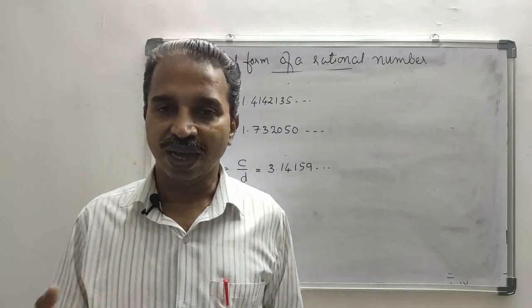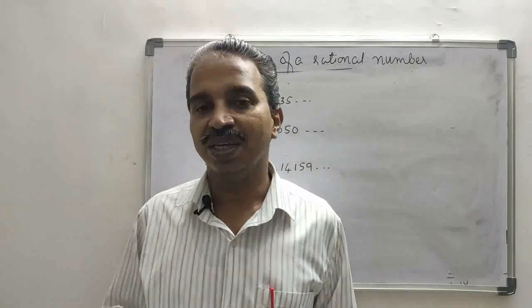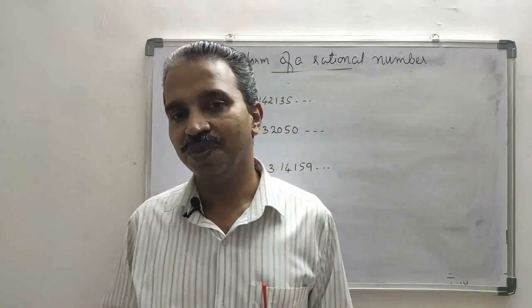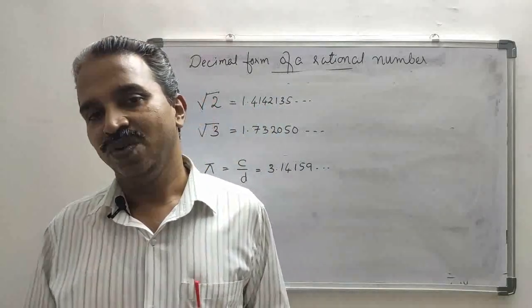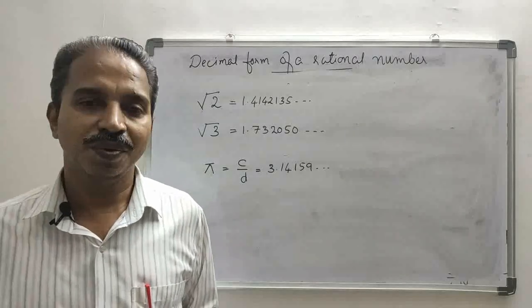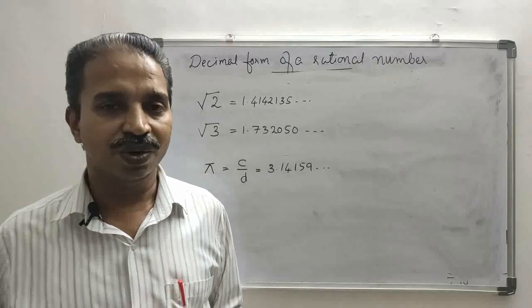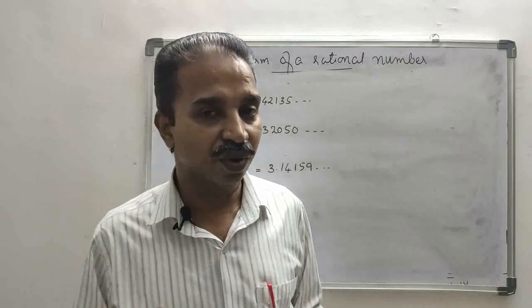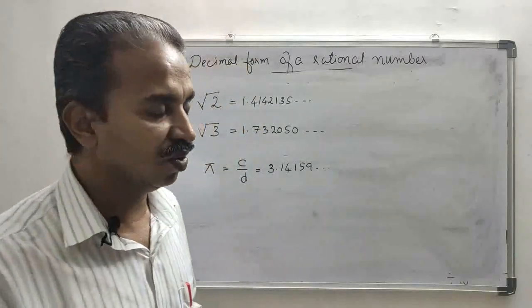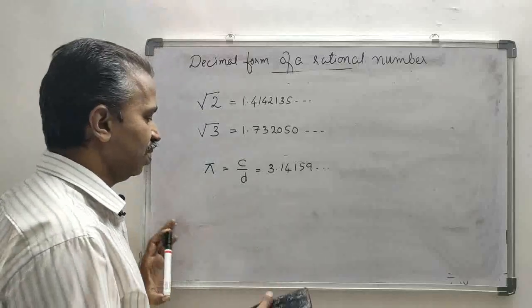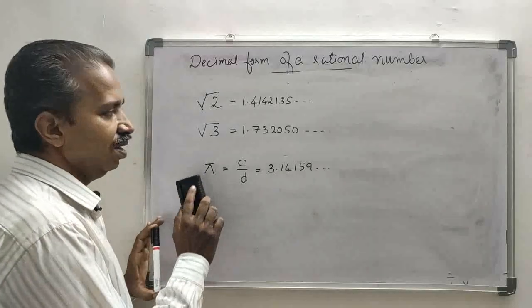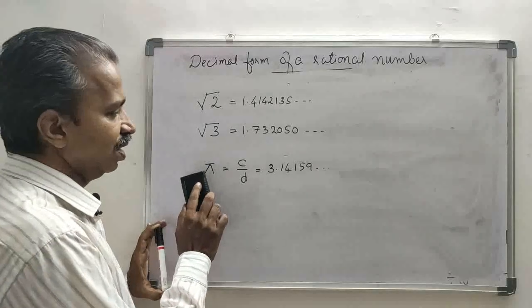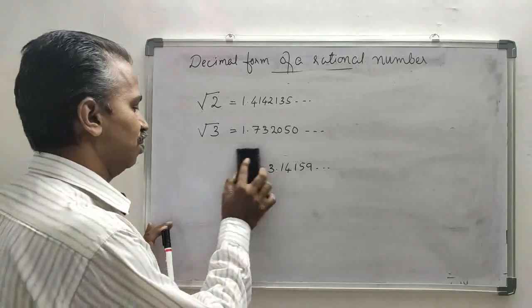For calculation, we take the value of pi as 22 upon 7 or 3.14, but these are actually approximate values of pi — the exact value of pi is irrational. So pi is an irrational number, and 22/7 and 3.14 are only approximate values used for calculation.